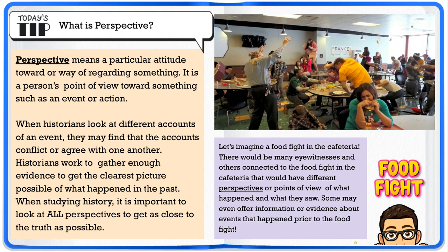The teacher, assistant principal, or dean standing in the picture might have a different perspective of the event than the girl on the table in the back, or the girl in the front who seems to be crying and upset. They might have different perspectives of what happened and how the event unfolded. Some may even offer information or evidence about events that happened prior to the food fight that escalated to the actual event. Trying to gather the information and perspective of all the individuals in the room will help us paint a better picture of what actually happened, similar to what historians have to do.